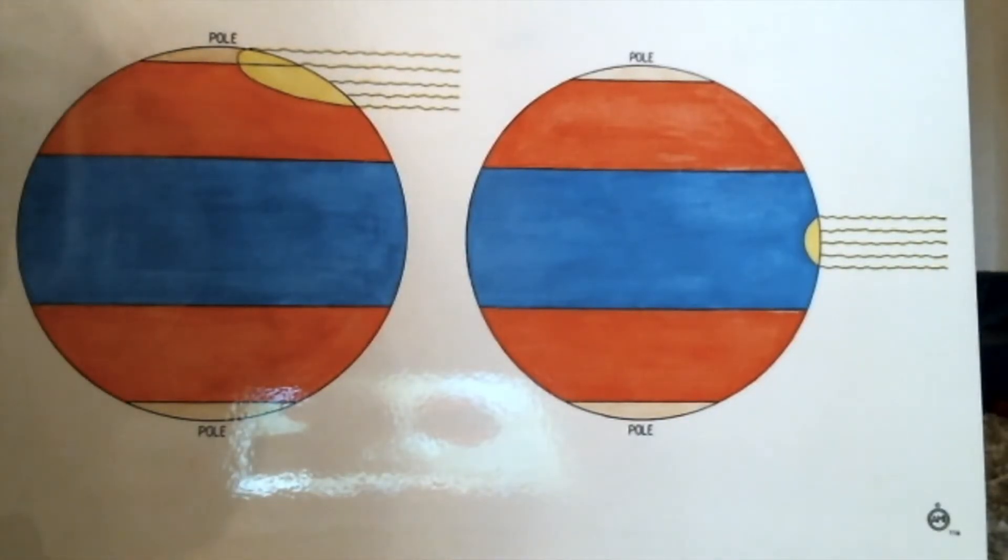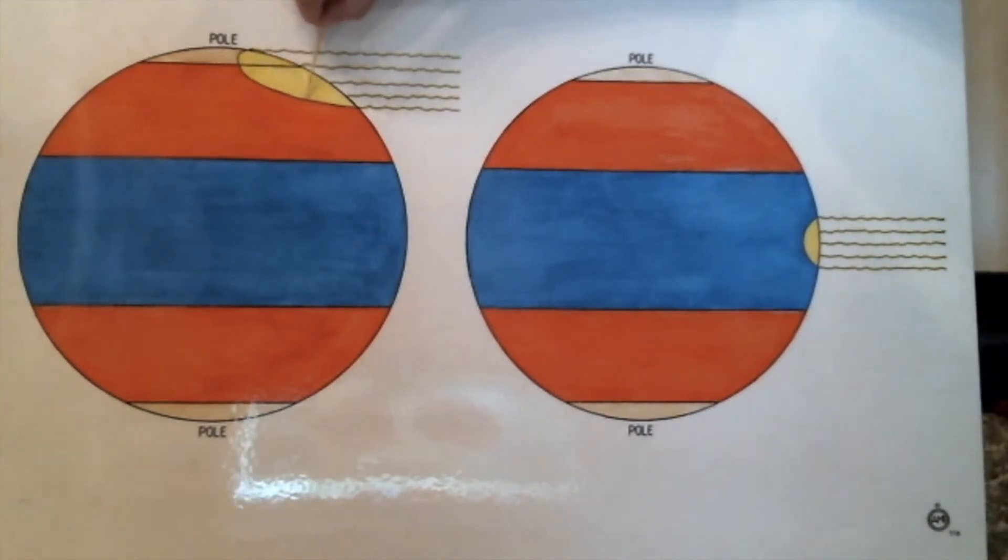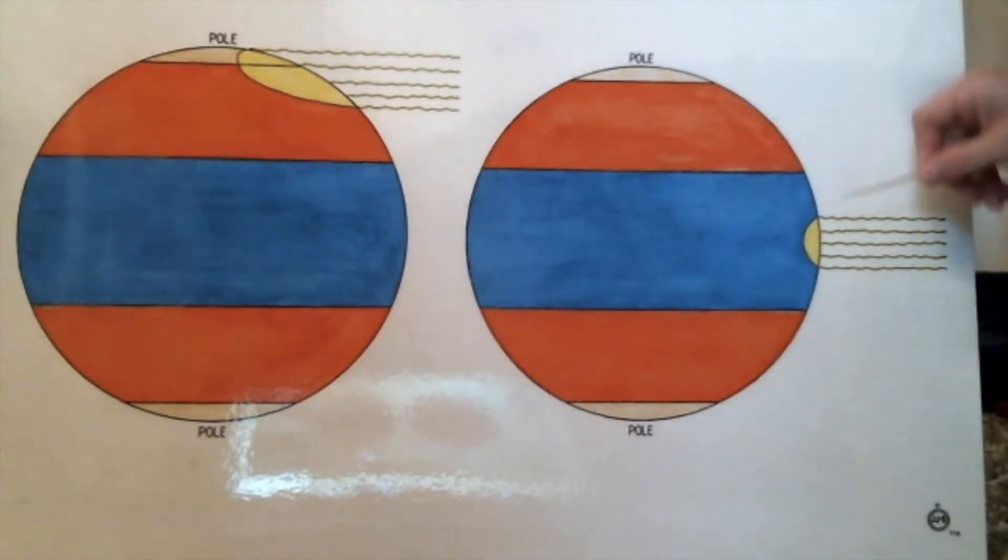So why does that matter? Let's take a look. So here I have a chart. So when we look at this side of the chart, we can see that we have one, two, three, four, five rays of sunlight hitting right here at the center of the earth. And this is how much space they have to warm up. When we look at this side, we have one, two, three, four, five rays of sunlight, the same amount of sunlight. But let's look at the space that it's covering. That's a much bigger space here than it is here, isn't it? And it's the same amount of light that's hitting there.